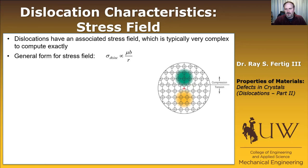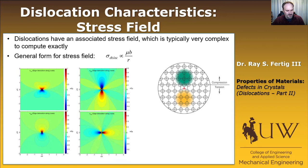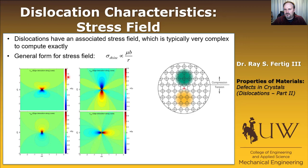Just to keep you informed, here is a picture showing the actual dislocation with the sigma 1,1; sigma 2,2; sigma 3,3; and sigma 1,2 stress components — the sigma 1,3 and 2,3 stresses are zero in this case. This gives you a flavor for how complex the stress field is, but for this class you just need to know that mu B over R is the stress field.